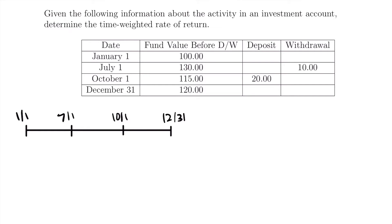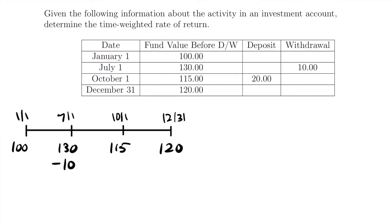Now let's record the balance of the fund on each date before any cash flows. On January 1st we have $100, on July 1st we have $130, on October 1st we have $115, and on December 31st we have $120. For deposits and withdrawals: on July 1st there is a withdrawal of $10, so we write minus $10. On October 1st there is a deposit of $20, so we write plus $20. Now we have transferred all the information from the chart into our timeline.